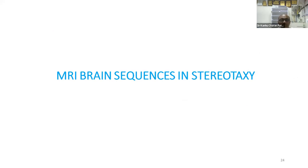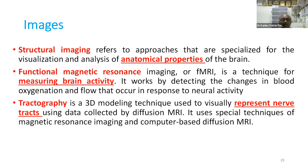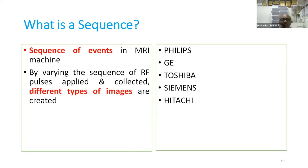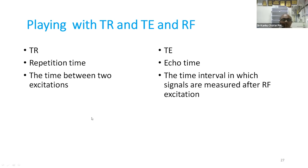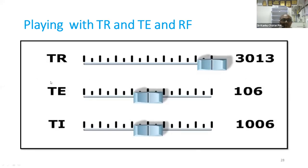For MRI brain sequences in stereotaxy: if you are studying anatomical properties you go for structural imaging, while for brain activity you use functional images such as tractography to represent white matter tracts. The events that happen during acquiring an MRI image are known as a sequence. Different MRI vendors — Philips, GE, Toshiba, Siemens — use different names for the same sequences. Sequences are created by playing with relaxation time, echo time, and TR radio frequency.